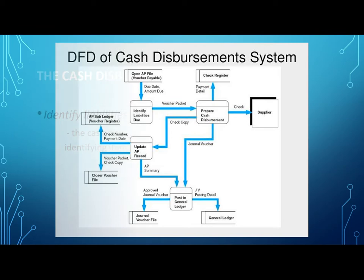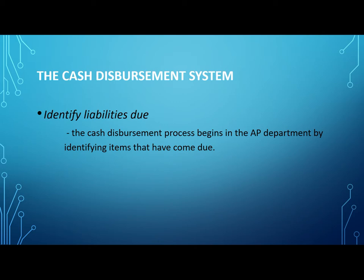Identify liabilities due. The cash disbursement process begins in the AP department by identifying items that have come due. Each day, the AP function reviews the open AP file and sends payment approval in the form of a voucher packet.